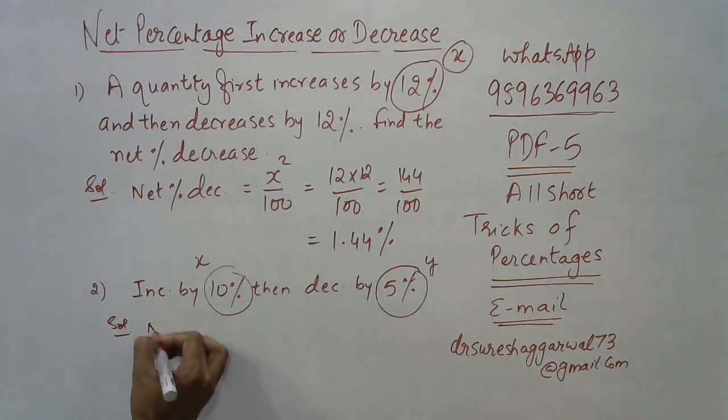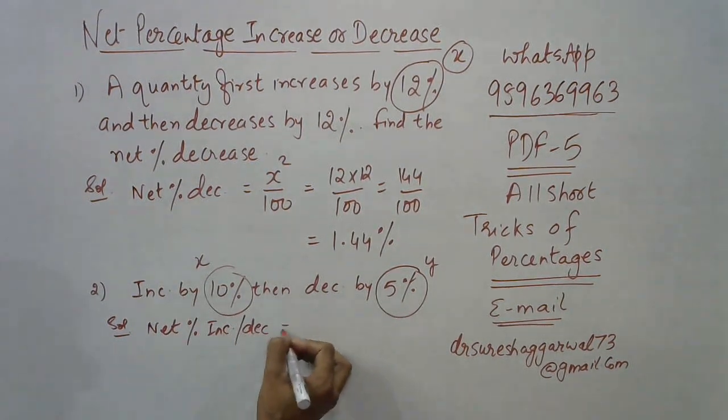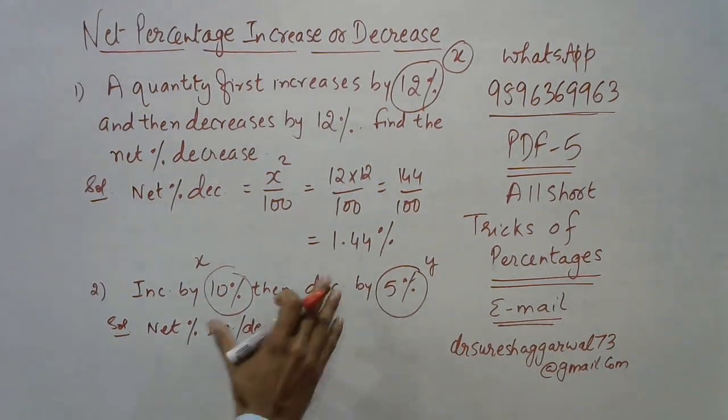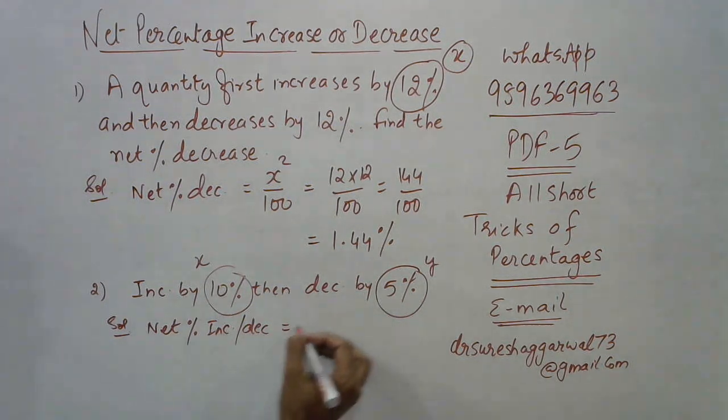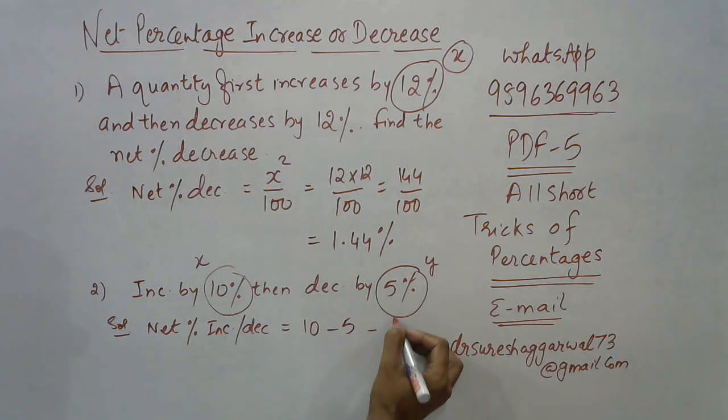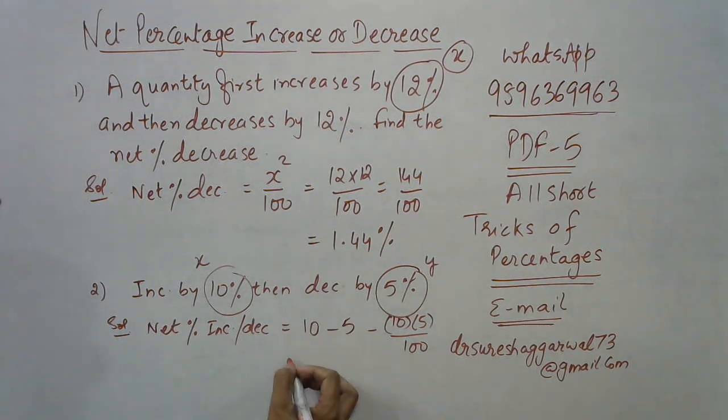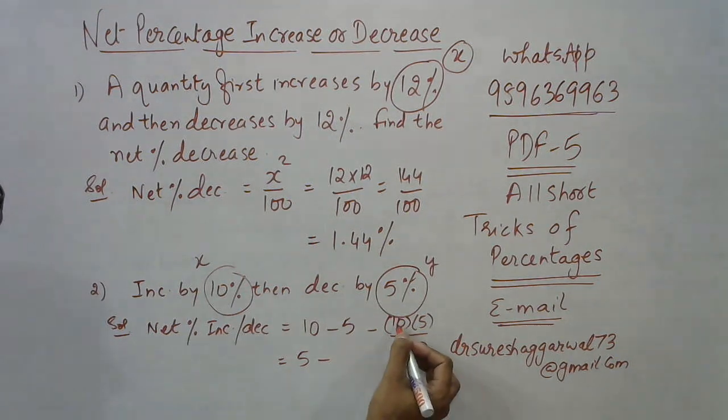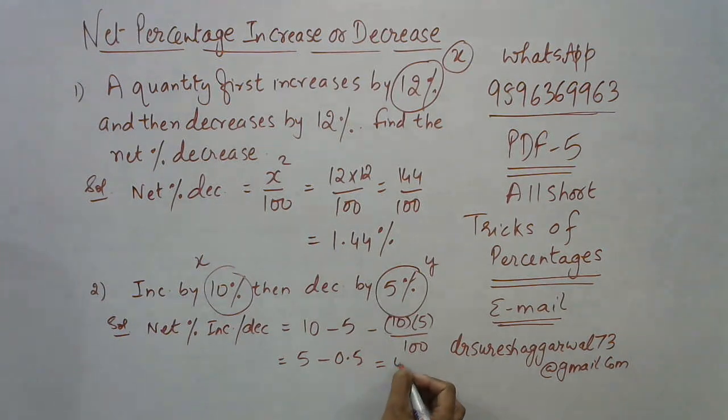How do you find the net percentage increase or decrease here? If you get your answer as positive it will be increase, if you get your answer as negative it will be decrease. The formula is: x (that is 10) minus y (that is 5), and then subtract the product of x and y (10 and 5) divided by 100. This will be 5 minus 50 ÷ 100, which is 0.5, so 4.5%.